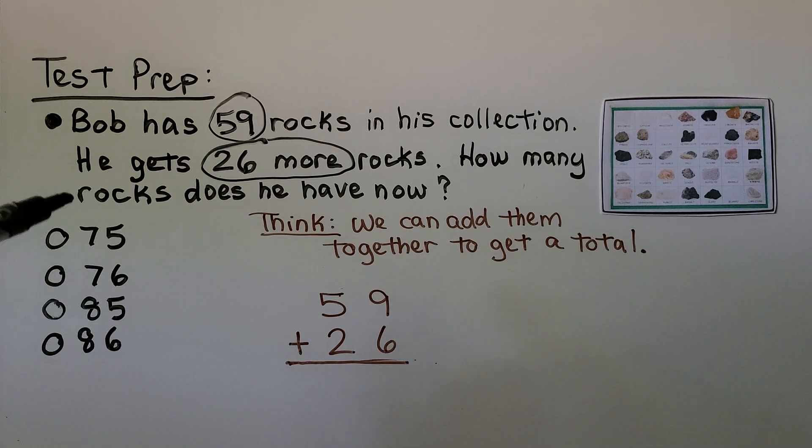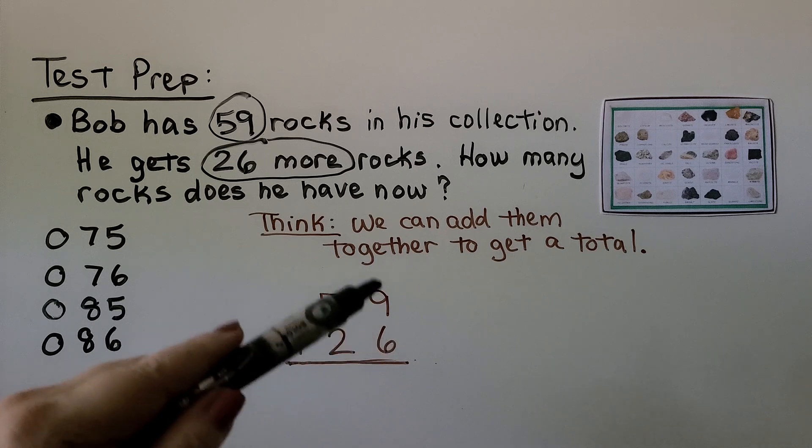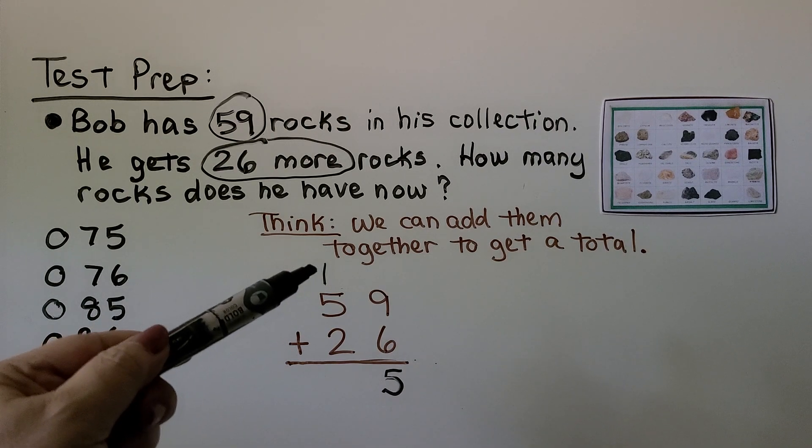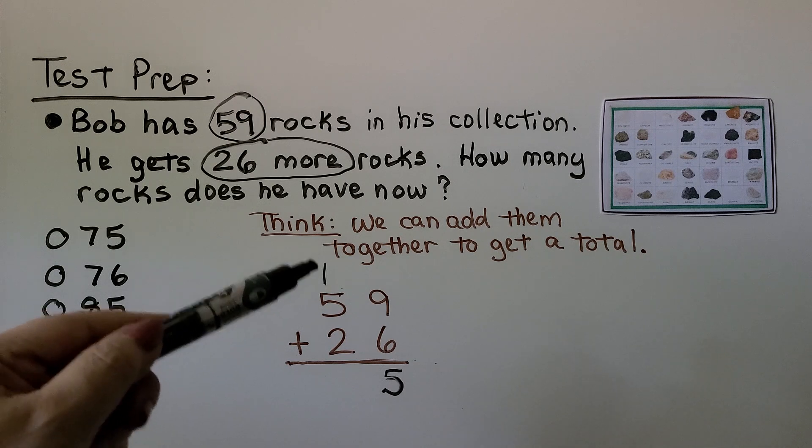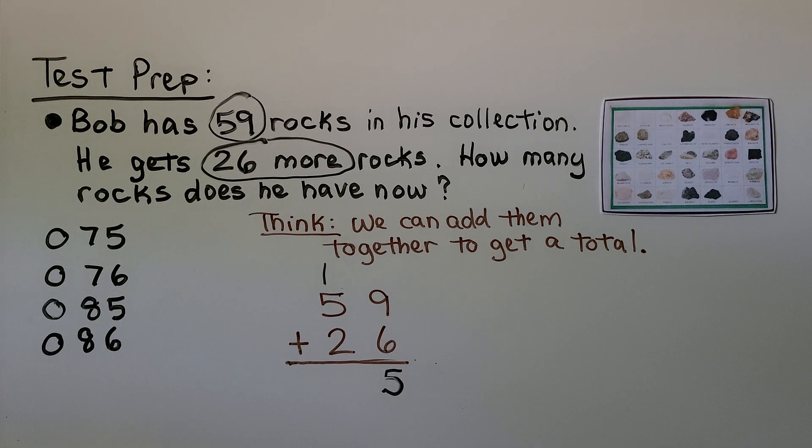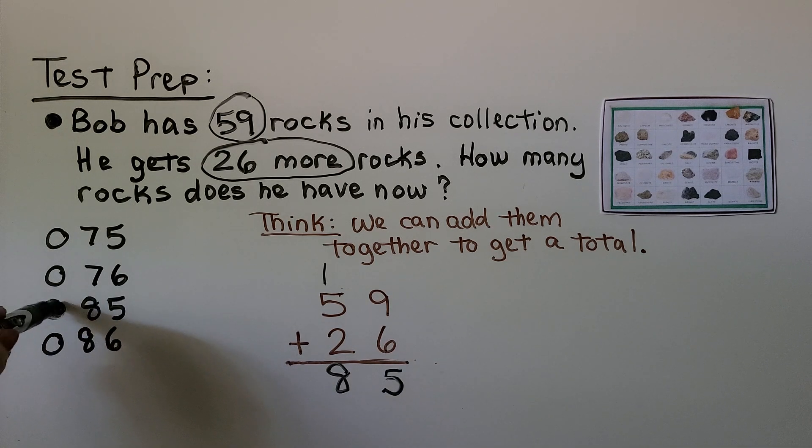Here's our choice of answers. We can start by adding the ones place. 9 plus 6 is equal to 15. 15 is 1 10 5 1s. We regroup the 10 to the tens column. Now we add the tens column. 5, 6, 7, 8. 59 plus 26 is equal to 85. We look over here and see, oh, there's 85. This must be the right answer. We fill in the dot. Make sure you fill it in completely.